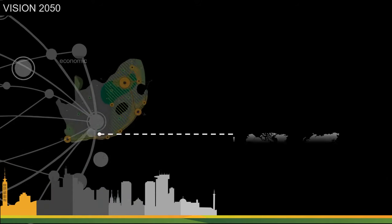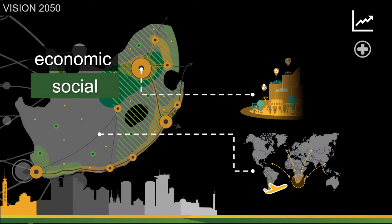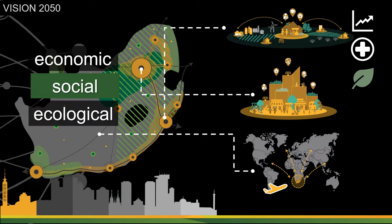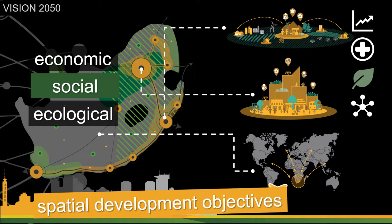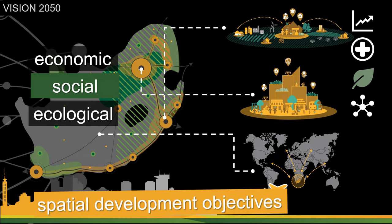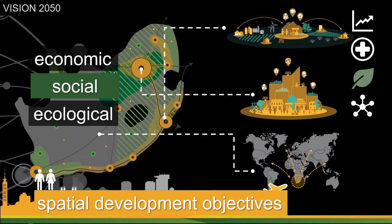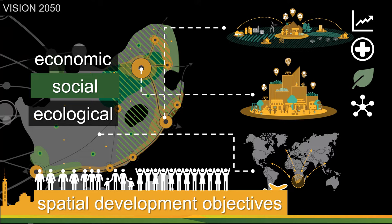Through progressive economic, social, ecological and spatial development objectives, values and ideals, the NSDF will move South Africa toward a desired, post-apartheid national spatial development pattern through its 2050 vision. We are redesigning our future, where there is space for all South Africans to thrive.